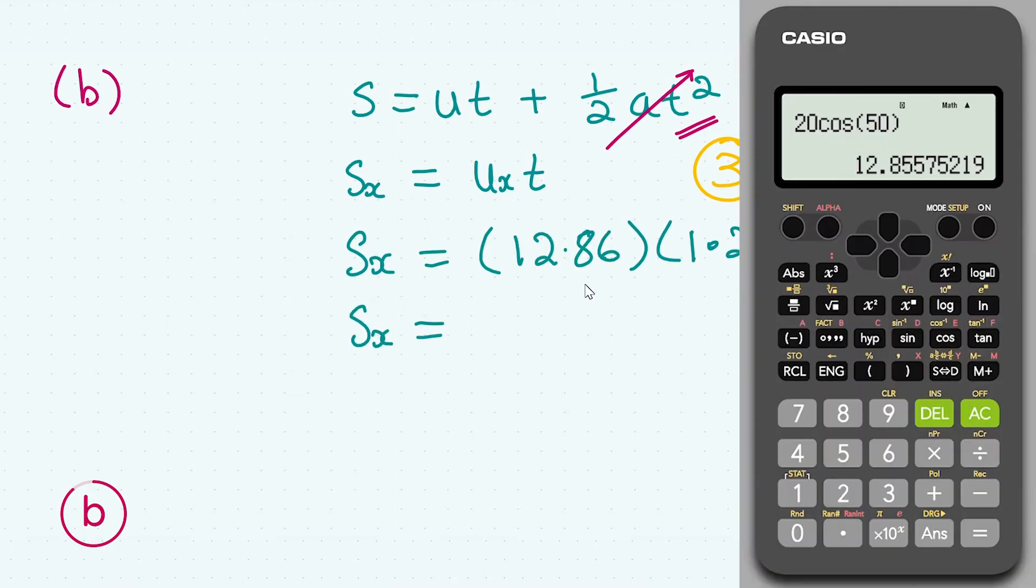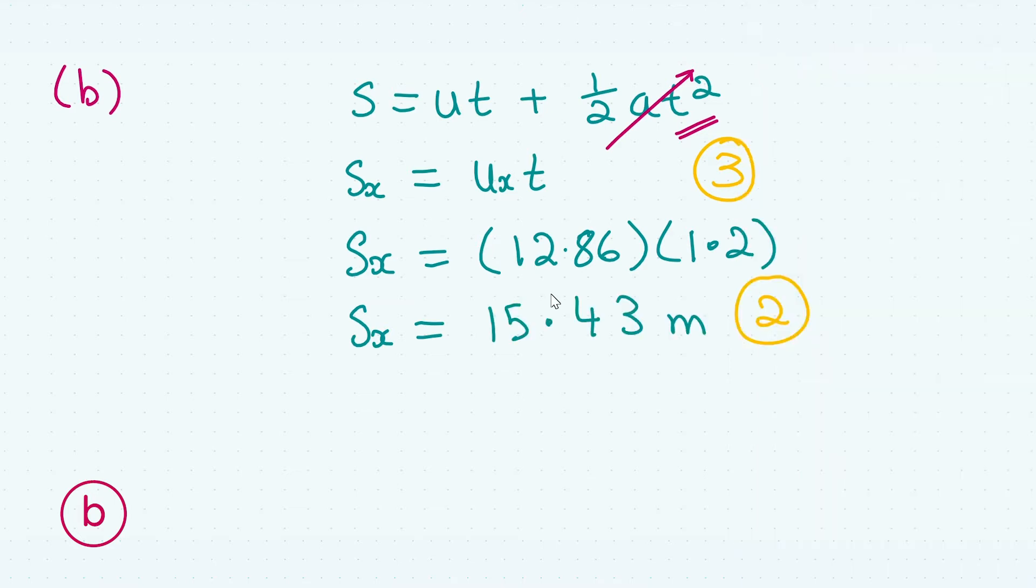I've rounded the horizontal velocity in my workings, however in the calculator I've kept it as one full number stored on screen so when I sub in I get the full decimal value. Giving us our final answer 15.43 meters. Not forgetting your units, you get your final two marks.